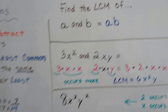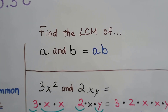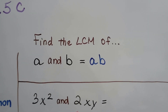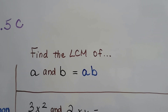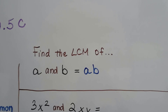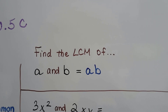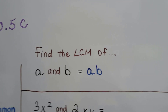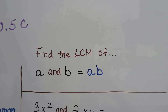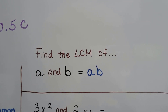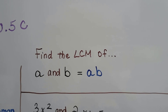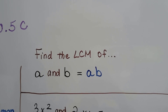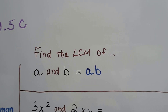You'll want to take some notes, and I hope you've reviewed factoring from Chapter 6 because that's really going to help you. We really need to remember how to factor, otherwise you're going to be lost. If you want to find the least common multiple of a and b, it's just a times b — that's an easy one.